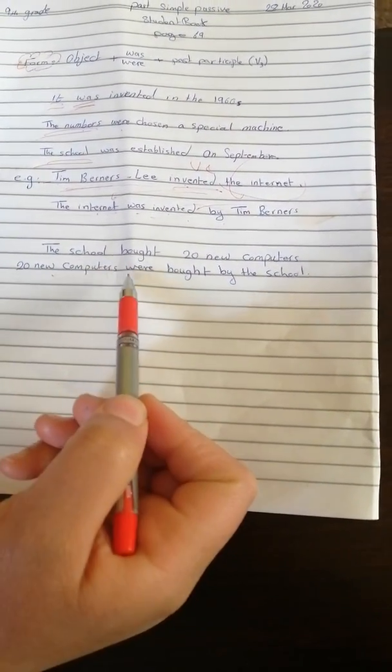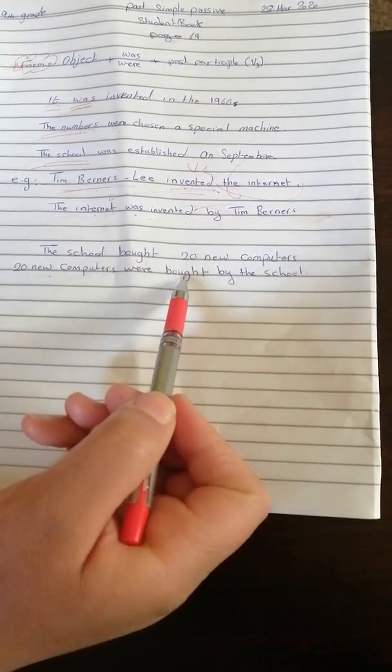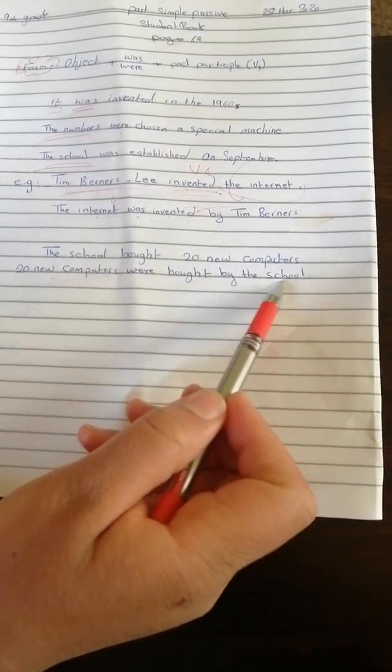20 new computers is plural, so it took were. Then bought, the verb 3 of bought is bought, and you can follow it by the school or omit it.